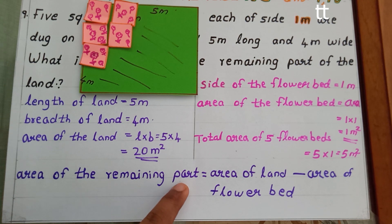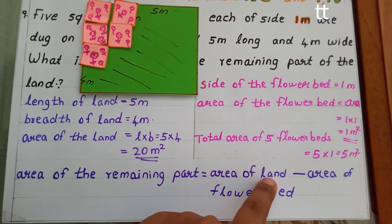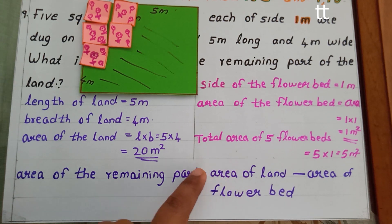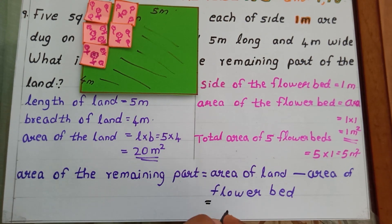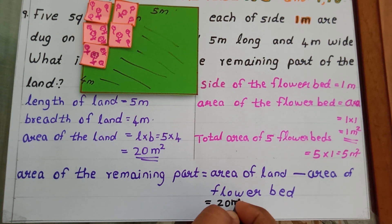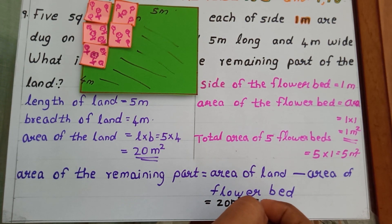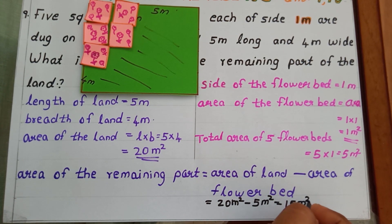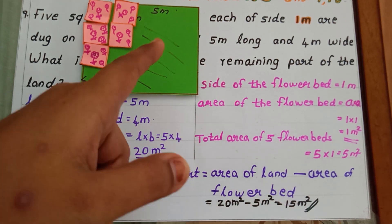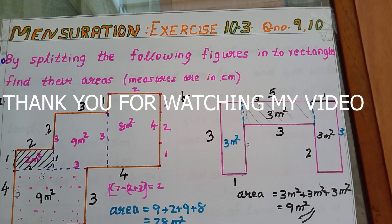Area of the remaining part equals area of the land minus area of the flower beds. We got area of the land as 20 meter square and area of the flower beds as 5 meter square. So 20 meter square minus 5 meter square equals 15 meter square. Fifteen meter square is the area of the shaded portion. If you like my video please like, share, and subscribe, and support me. Signing off, Amy Bejoy from Max Ninjas.